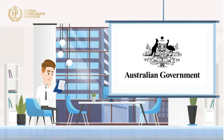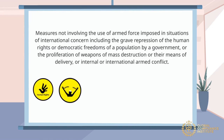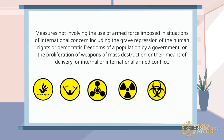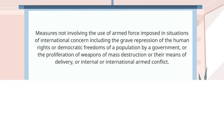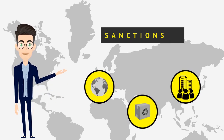The Explanatory Memorandum to the Australian Autonomous Sanctions Bill 2010 does expressly define sanctions as measures not involving the use of armed force, imposed in situations of international concern, including the grave repression of the human rights or democratic freedoms of a population by a government, or the proliferation of weapons of mass destruction or their means of delivery, or internal or international armed conflict. Sanctions impose restrictions on activities that relate to particular countries, goods and services, or persons and entities.